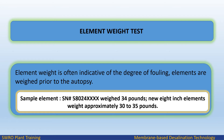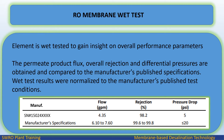Element weight test: Element weight is often indicative of the degree of fouling. Elements are weighed prior to the autopsy — a sample element weighed 34 pounds, while new 8-inch elements weigh approximately 30 to 35 pounds. RO membrane wet test: The element is wet tested to gain insight on overall performance parameters. The permeate product flux, overall rejection, and differential pressures are obtained and compared to the manufacturer's published specifications, with test results normalized to those conditions.